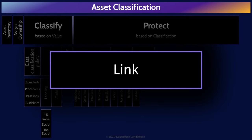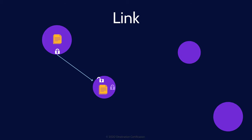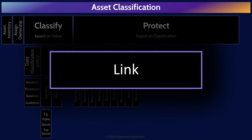Link encryption differs significantly in that the data is decrypted and then re-encrypted at every node it passes through from source to destination. The packet, including the header, is encrypted at the source and sent to the first node, which decrypts the packet, looks at the destination address to determine the next hop, re-encrypts the packet, and forwards it on. The advantage is that routing information is hidden in transit, but the huge downside is that data is decrypted at every node, making link encryption not the best for protecting data.